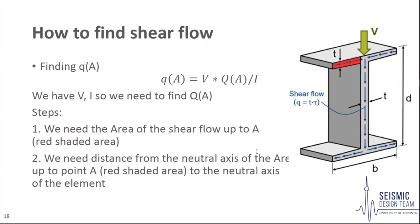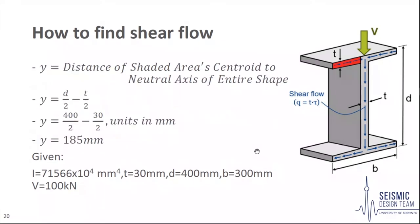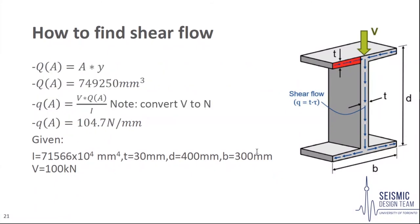First, we find shear flow at A, a point along the left flange. We need the area up to A, shaded in red, and the distance y from the neutral axis of the shaded area to the neutral axis of the element. The area A is half of b minus half t, multiplied by t, giving 4,015 mm². The distance y is half d minus half t, or 185 mm. The first moment of area Q equals A times y, giving 749,250 mm³. The shear flow at point A is found to be 104.7 N/mm.